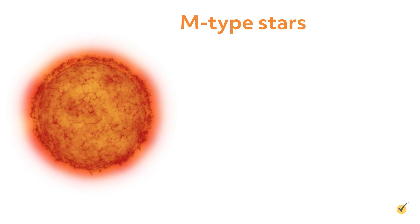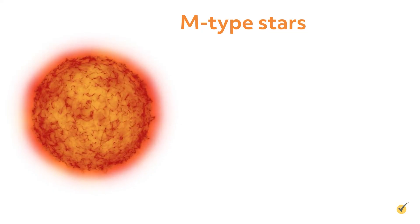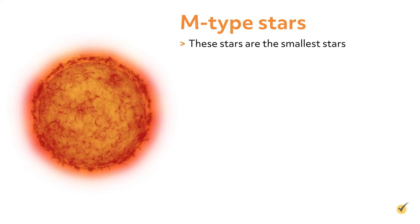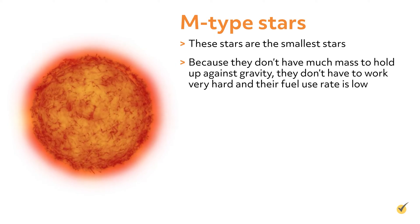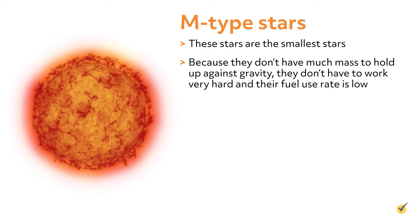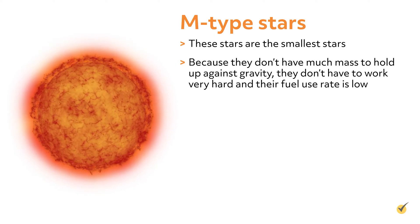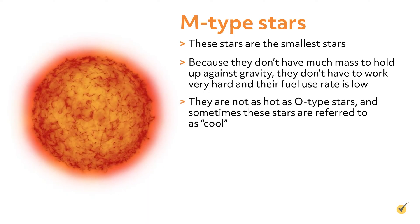On the other end of our spectroscopic sequence, we see the letter M. These stars are the smallest stars. And because they don't have much mass to hold up against gravity, they don't have to work very hard, and their fuel use rate is low.